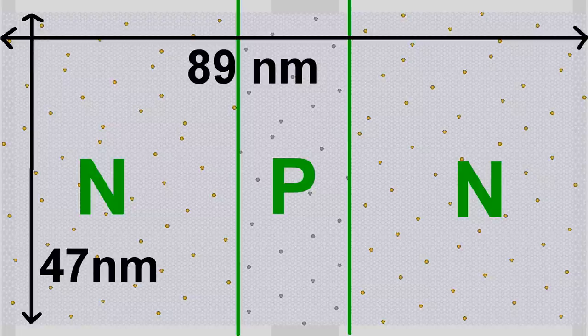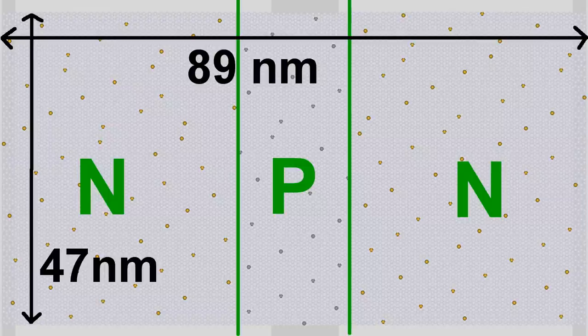The total dimensions of the transistor are 100 by 122 atoms, which corresponds to approximately 89 by 47 nanometers.